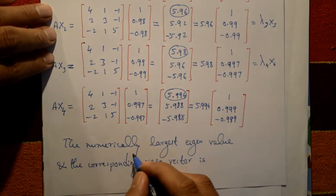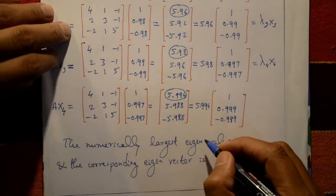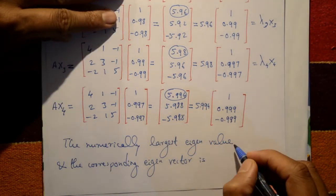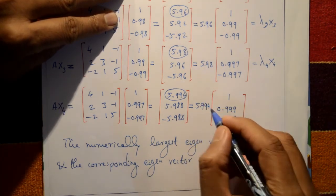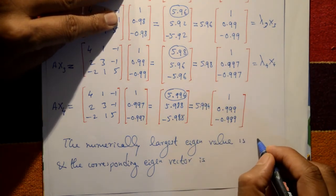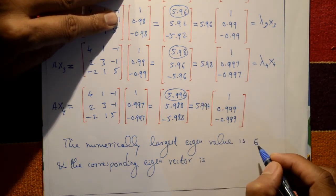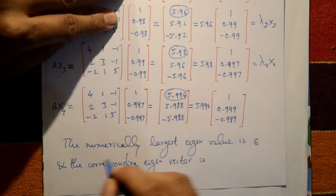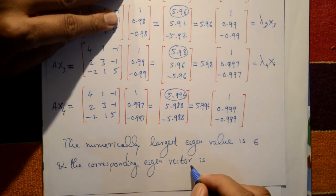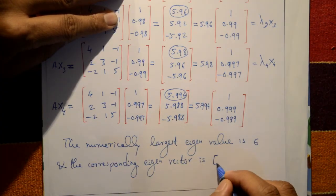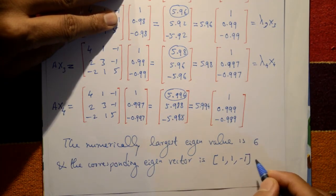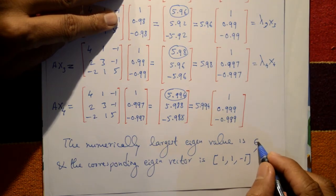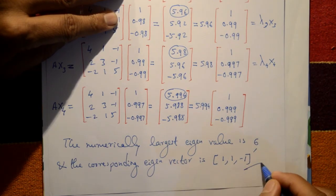The numerically largest eigenvalue, taking a round figure, is 6. The corresponding eigenvector is [1, 1, -1]ᵀ. These are the required eigenvalue and eigenvector.